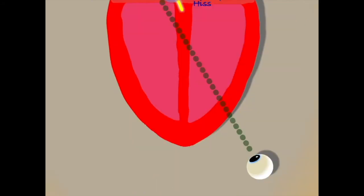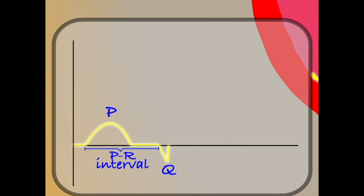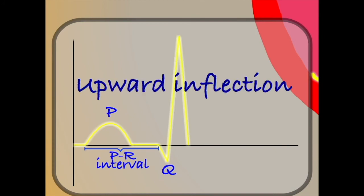It then carries on down the left and right branches, moving rapidly towards the eye. This will give us an upward inflection on our ECG, which we will label R.